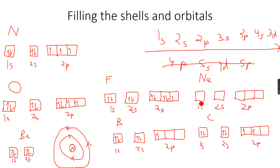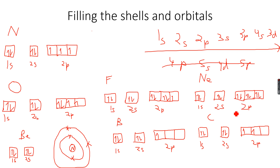When you look at neon: one and two, one and two — first these three will fill with one electron each, and then they will fill further. The tenth electron goes into the third one and pairs up with it. This is how we fill orbitals.